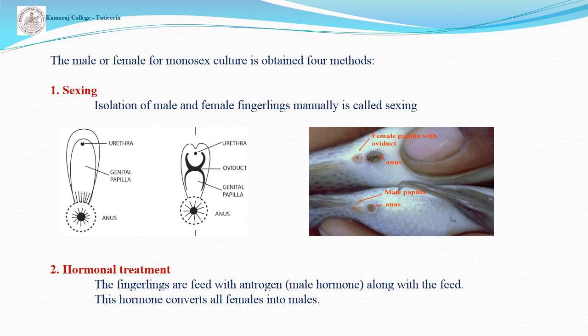The male is generally preferred for monosex culture. The male or female for monosex culture is obtained by four methods: sexing, hormonal treatment, sterilization, and hybridization. Sexing means the manual isolation of male and female fingerlings. The fry and fingerlings are collected from the wild, and males and females are identified by observing the genital papilla — the male has a single opening while the female has two openings.